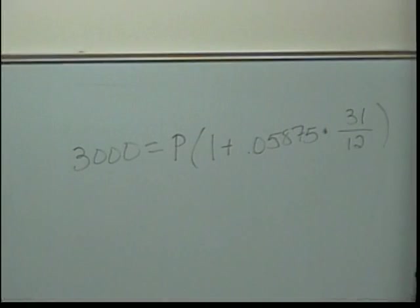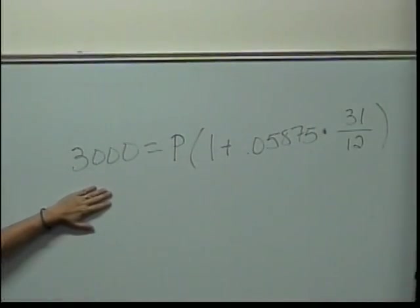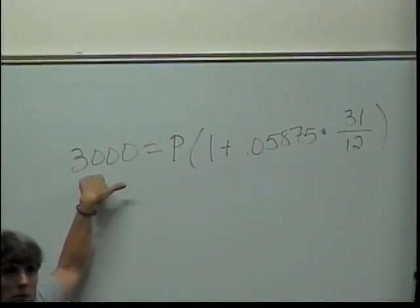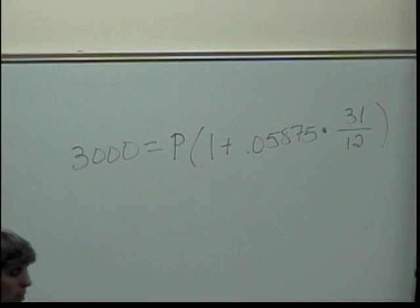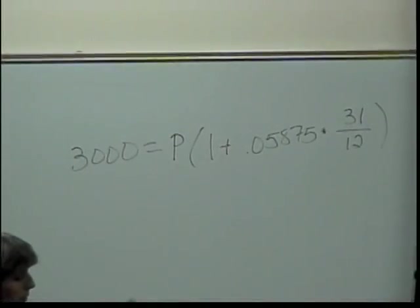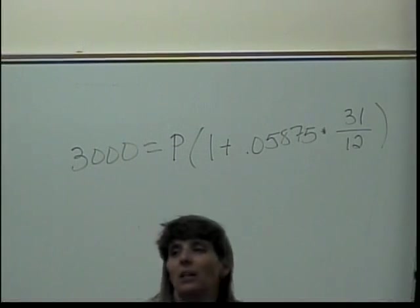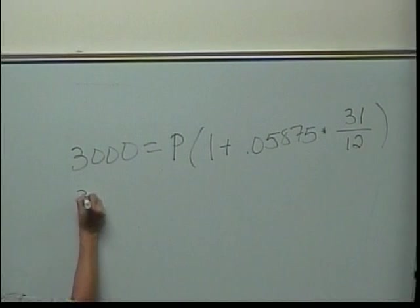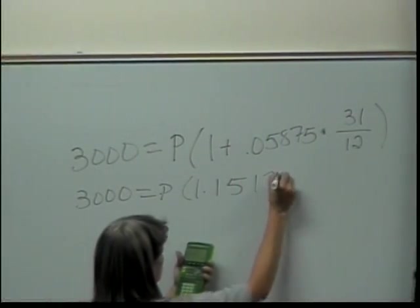To solve this problem, I calculate this side and then divide it into this side. So 3,000 divided by this parenthesis, because the P is being multiplied by it. In order to isolate P, I need to divide by it. Let's calculate: 1 plus .05875 times 31 divided by 12. I get 1.151770833. Don't round any of these problems until you get to the end. So I want to divide that whole number into 3,000: 3,000 equals P times 1.151770833.